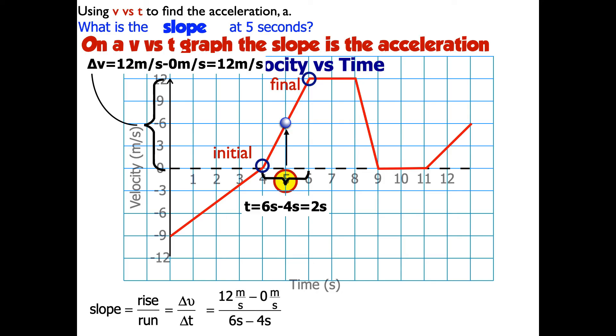So 12 divided by 2 is going to give me 6. It's going to be units of the rise divided by units of the run. So that's going to be meters per second divided by seconds. That's the same as meters per second times 1 over seconds. That's where I get the units on the picture here of 6 meters per second squared.